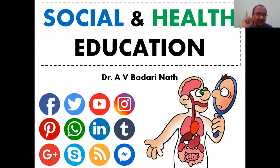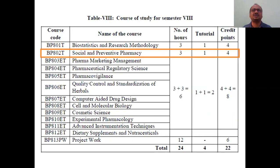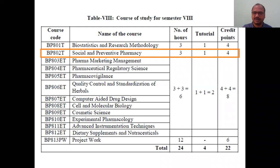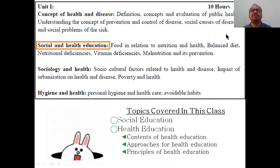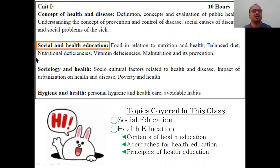So two topics are covered together in one class. The subject we are studying is called 'Social and Preventive Pharmacy,' a new subject introduced to pharmacy students by the Pharmacy Council of India this year. This is the syllabus — Unit One — and I have already completed the earlier portions.